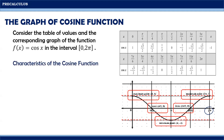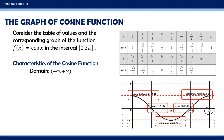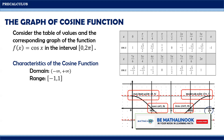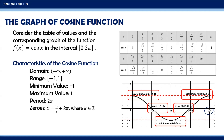Thus, the characteristics of the graph of the cosine function are the following: the domain is from negative infinity to positive infinity; the range is from -1 to 1; the minimum value is -1; the maximum value is 1; the period is 2π; and the zeros are x = π/2 + kπ, where k is an integer.